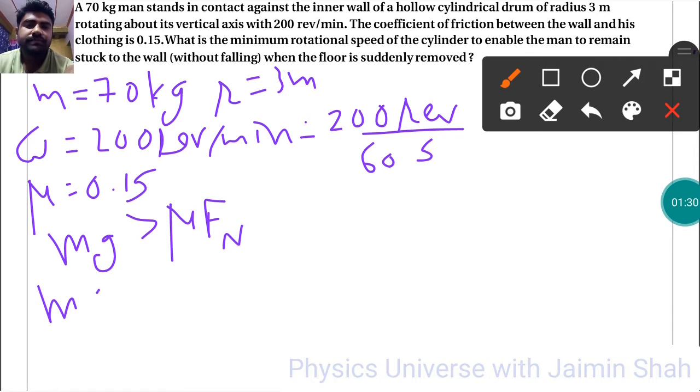So mg greater than mu Fn. Fn is the centripetal force, so centripetal force is m R omega squared. Now m gets cancelled out.